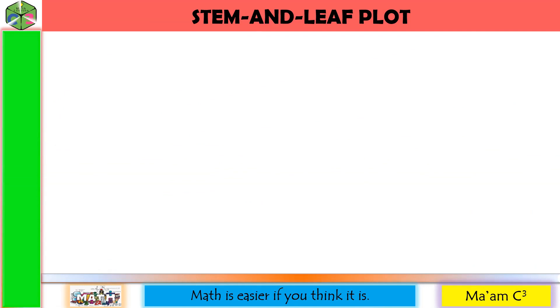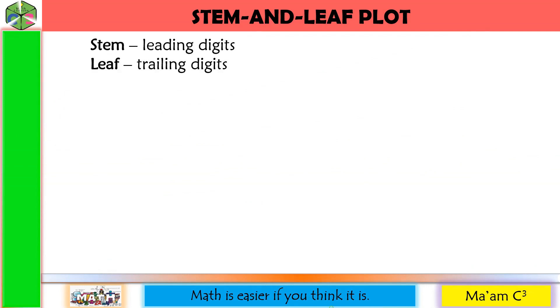Now let's discuss the stem and leaf plot. There are two things you need to remember here: the stem, which are the leading digits, and the leaf, which are the trailing digits.